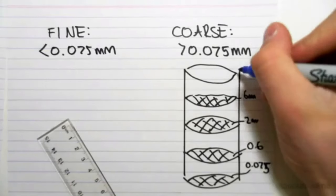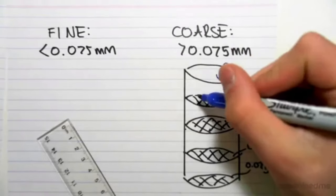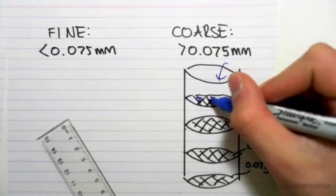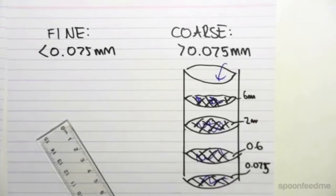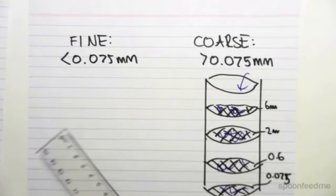What we'll do is we'll get our soil sample, we'll throw it in here, and we'll shake it around. Some of it will remain there, some of it will remain there, some of it will remain there, and some of it will remain there.